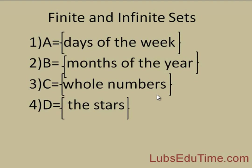The stars are another example. Set D is a set of stars — the number of stars in the sky is infinite. You can count and keep counting and you will not stop. So a finite set allows you to count and name all elements, but with an infinite set you cannot count all the elements or members.